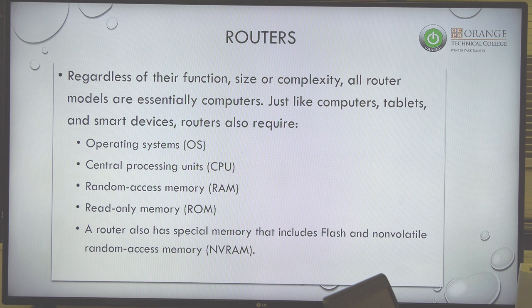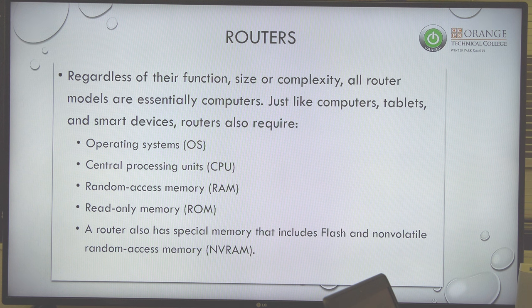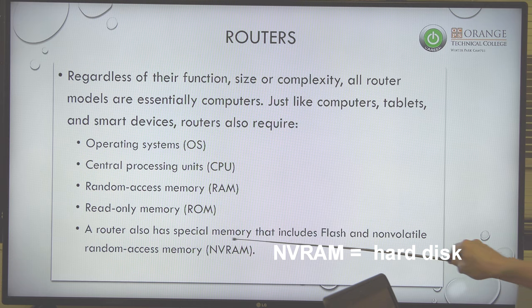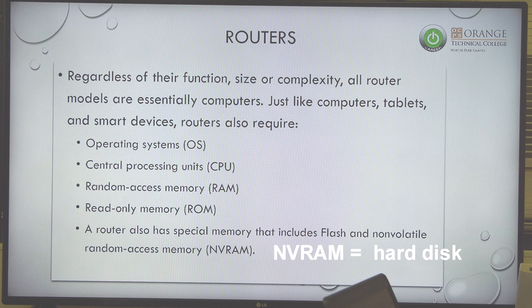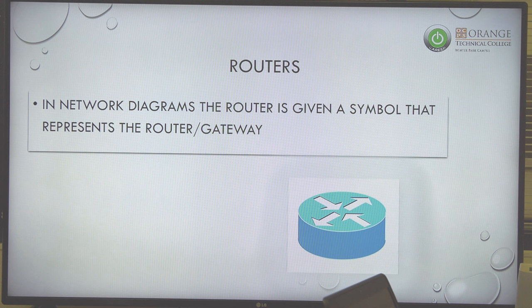Juniper uses their own operating system. So a router is going to have an operating system, typically a Unix or Linux variant. It's going to have a CPU, RAM, and ROM. The unique feature of routers is that they talk a lot about NVRAM — think of that as their hard drive. Whenever we say NVRAM, that is the router's hard drive.